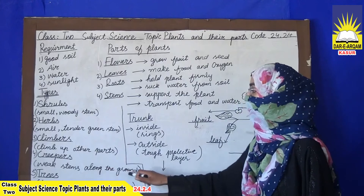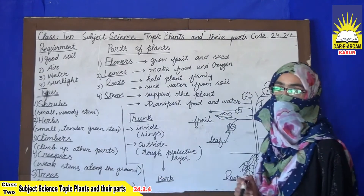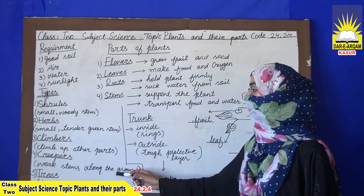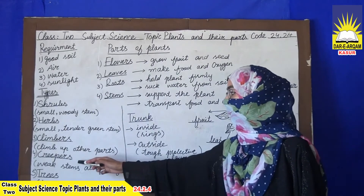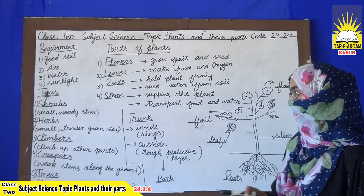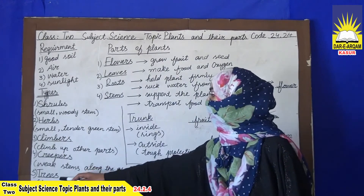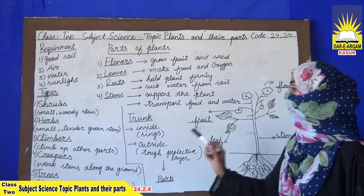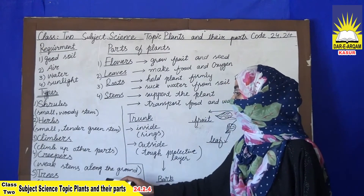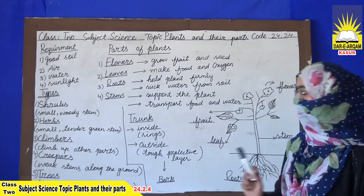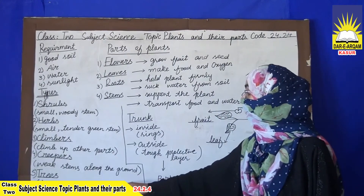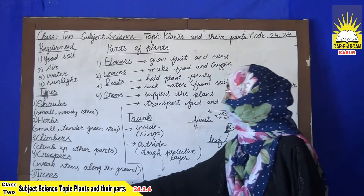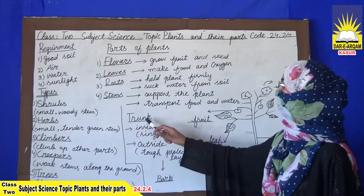An example of a climber is grapevine. Creepers are plants with weak, tender stems that grow along the ground. An example of a creeper is pumpkin, which grows along the ground. Trees are the largest plants with a single woody stem.